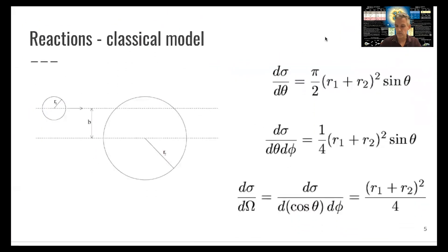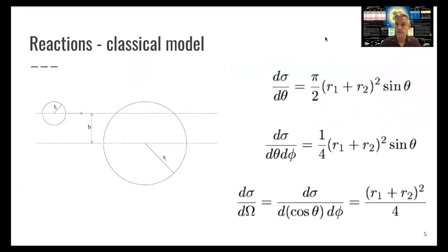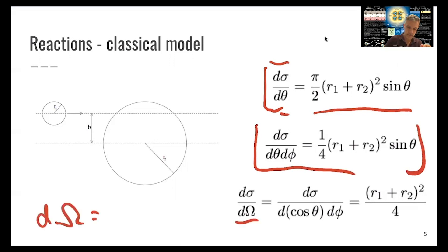So now we can analyze this reaction a little bit more and look at angular distributions. We find that this cross section, differential distribution, is given as a function of sine theta. We can also express this using the azimuth or as a solid angle here. As a reminder, the solid angle is equal to sine theta d theta d phi.